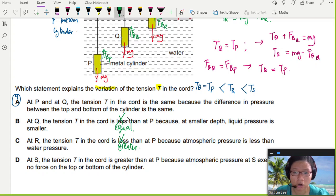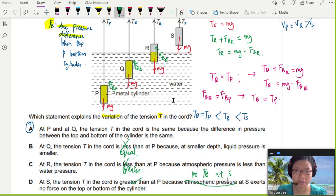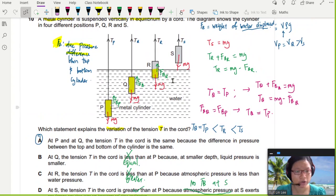At S, tension in the chord is greater. Sure. Not because of atmospheric pressure at S. It's because there's no buoyancy force at S. The cylinder is not submerged. So that's all for this straightforward concept question. The whole idea of buoyancy force due to water being displaced causing a pressure difference above and below the cylinder. That's it.